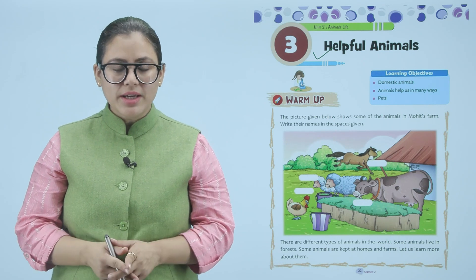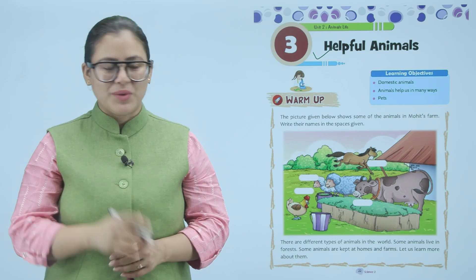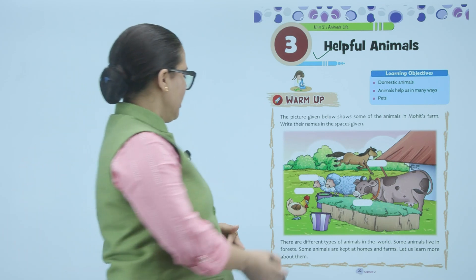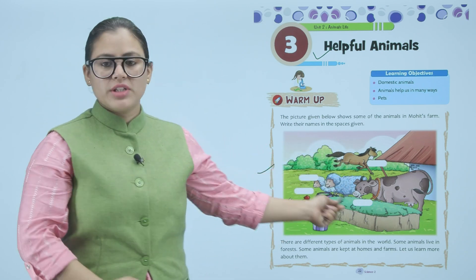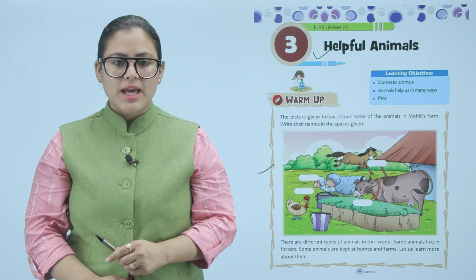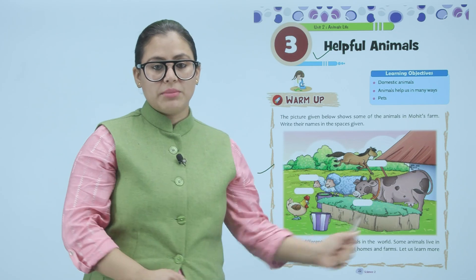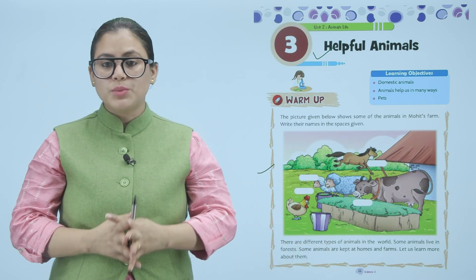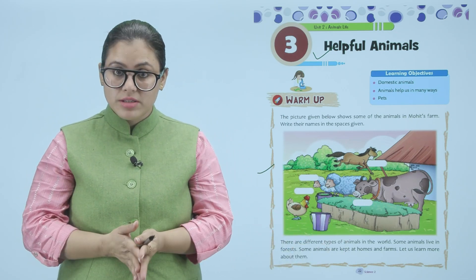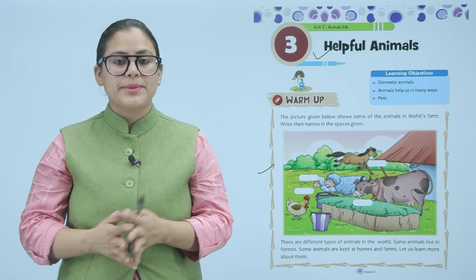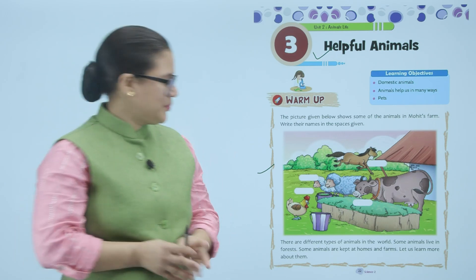The picture below shows some of the animals in Mohit's farm — write their names in the spaces given. There are different types of animals in the world. Some animals live in forests, some animals are kept at homes and farms. Let us learn more about them.